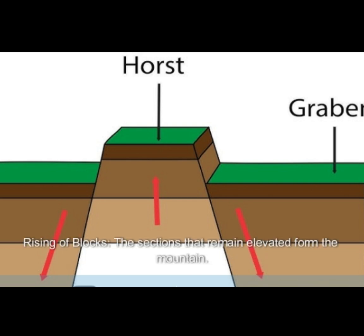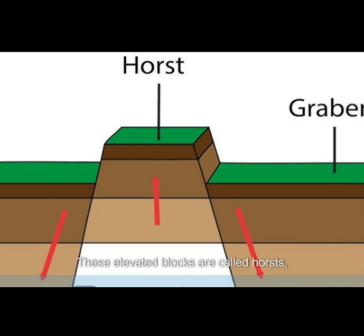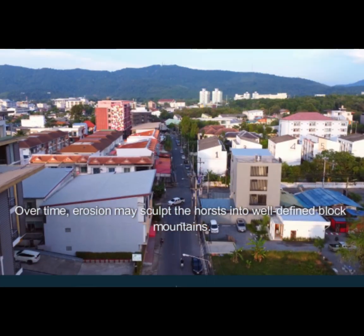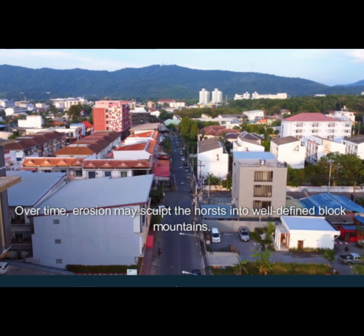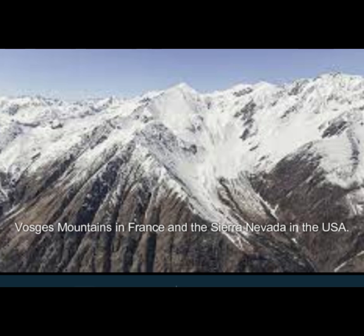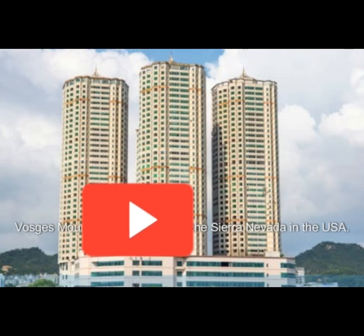Rising of blocks: the sections that remain elevated form the mountain. These elevated blocks are called horsts, while the lower areas are called graben. Over time, erosion may sculpt the horsts into well-defined block mountains. Well-known examples include the Vosges Mountains in France and the Sierra Nevada in the USA.